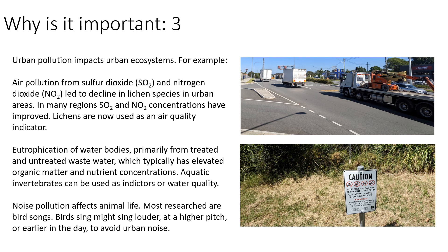Thirdly, urban pollution has impacts on ecology and urban ecosystems. The first example is using lichens as air quality indicators — a field of research spanning many decades, originating when researchers noticed lichens had disappeared from trees and rock surfaces in city centres, likely due to air pollution. They found it was particularly sulfur dioxide, and these days nitrogen dioxide, that leads to a decline in lichen species in urban areas. Sulfur dioxide was largely from burning fossil fuels, which has decreased, but nitrogen dioxide from traffic has improved but is still not great. Lichens are now used as air quality indicators, with sites mapping air quality using lichens in many parts of the world.